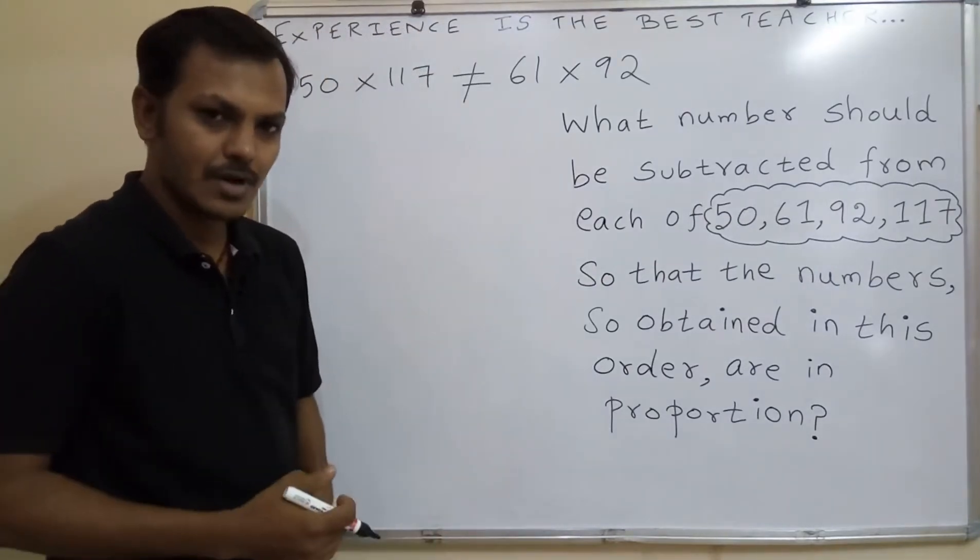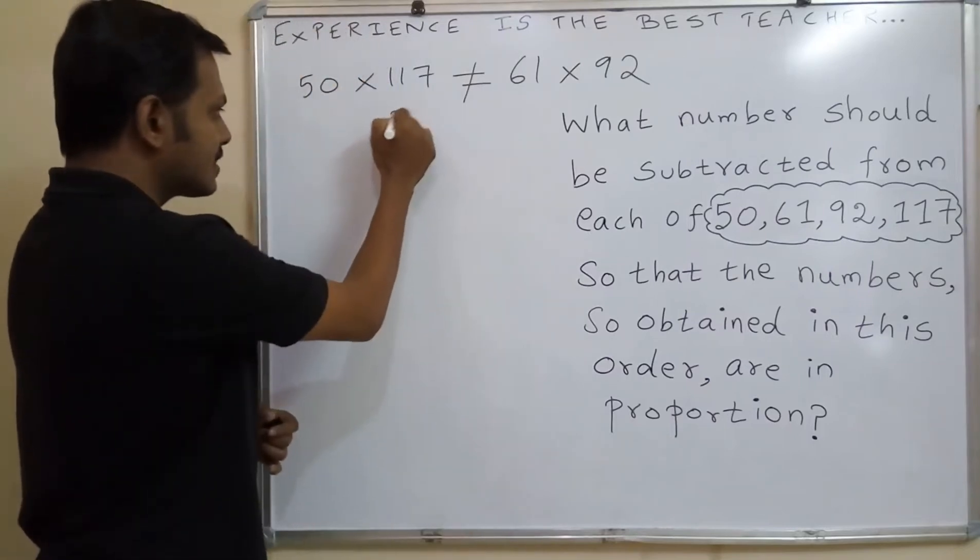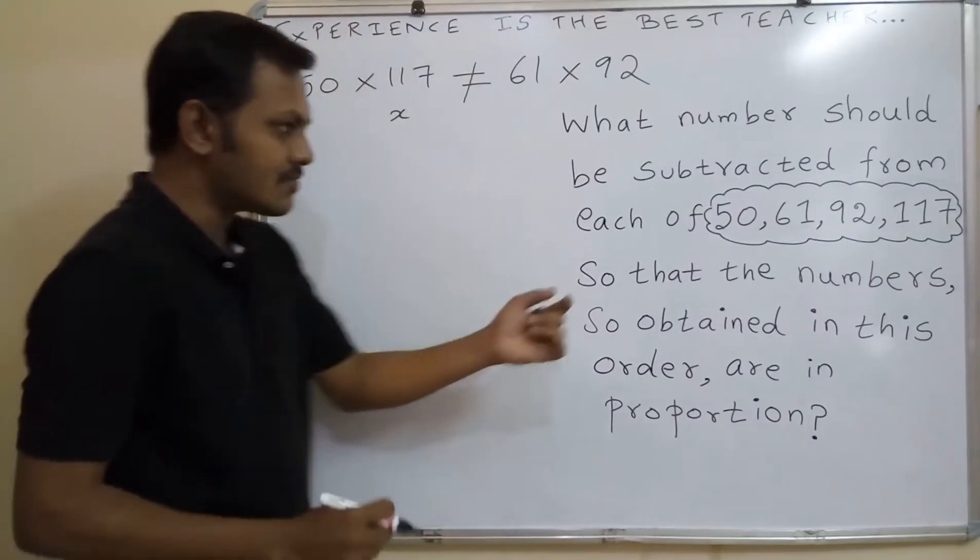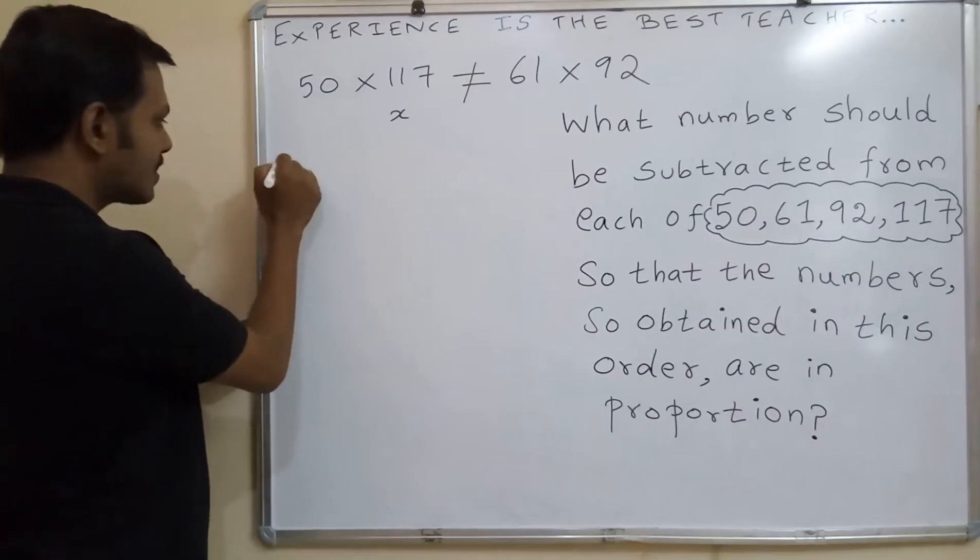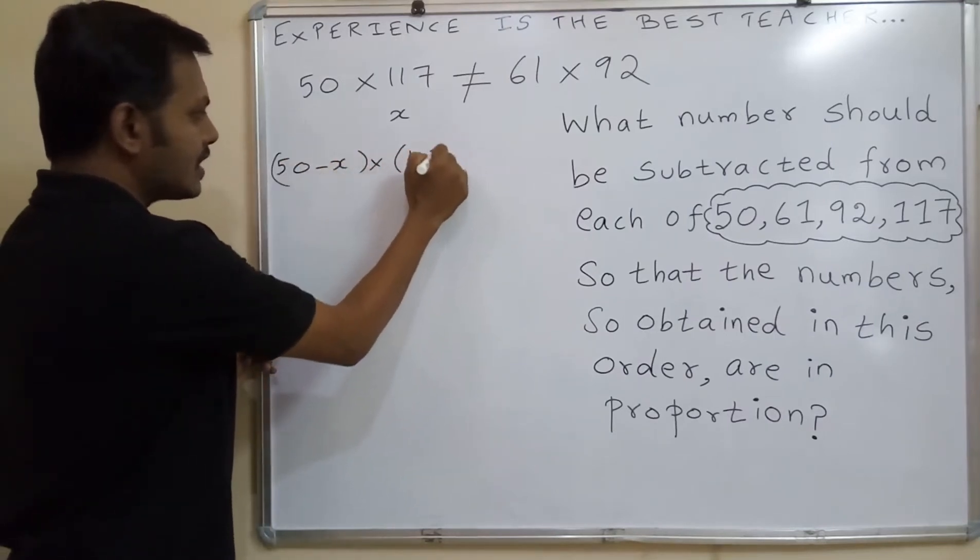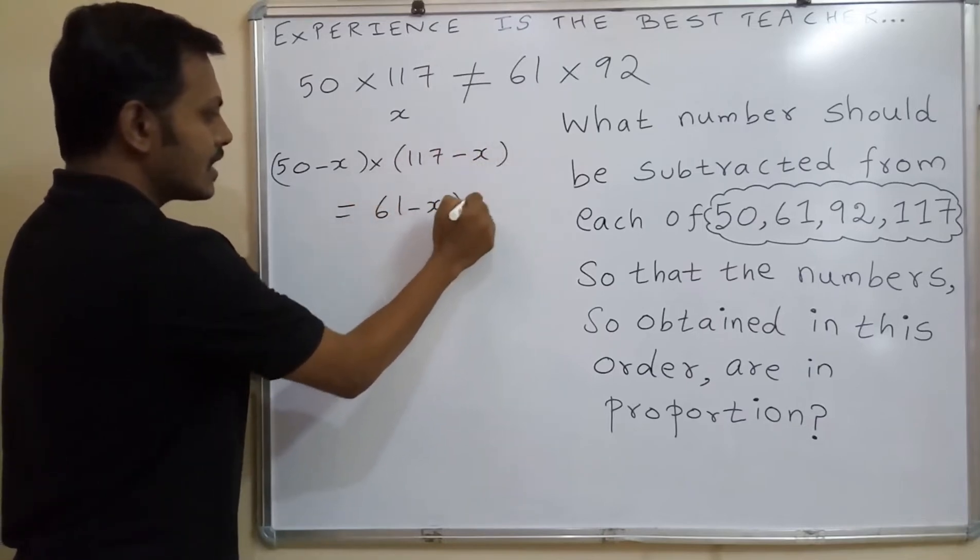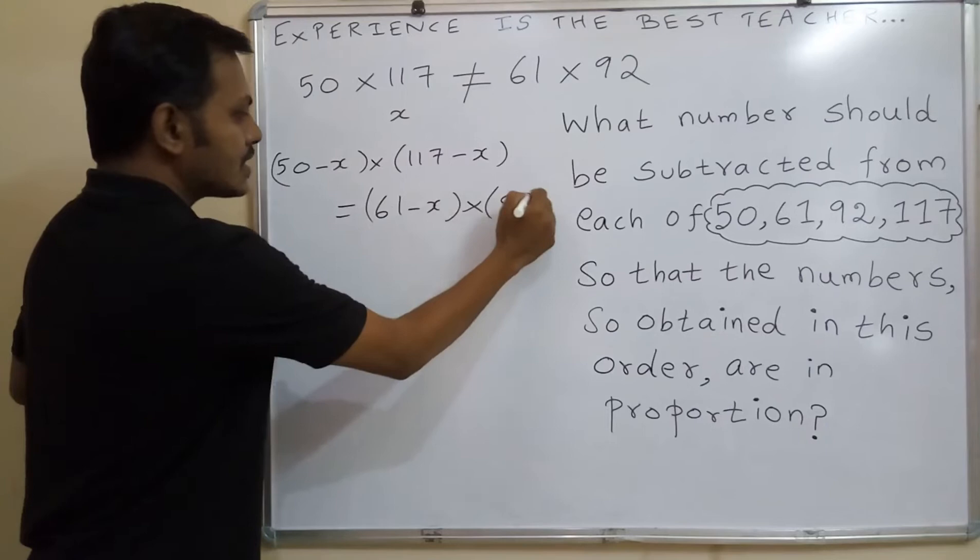So unknown - we are going to subtract one number. That number we don't know. That number we are going to find out, so you will take it as x. So you are going to subtract from each of this number: 50 minus x, 50 minus x into 117 minus x which is equal to 61 minus x into 92 minus x.